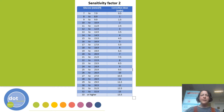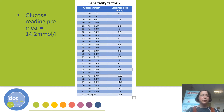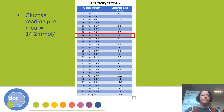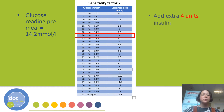Here is an example of a sensitivity factor table where the sensitivity factor is 2, meaning 1 unit of insulin would be expected to bring this individual's glucose reading down by 2 millimoles per litre. Let's say an individual has a glucose reading of 14.2 before they eat. Find 14.2 on the left-hand side of the table and read across — the suggested correction dose is 4 units.